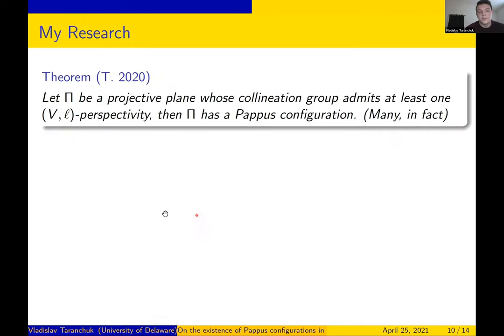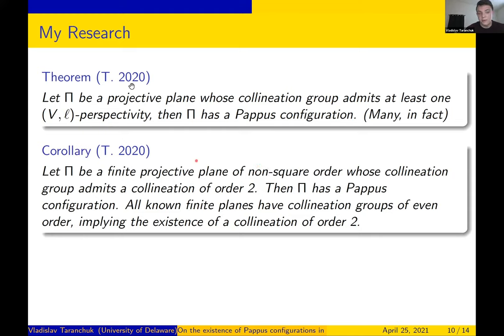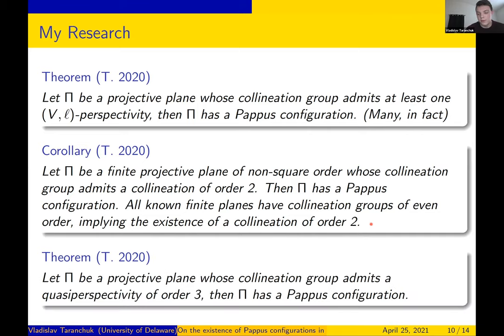So what results was I able to obtain? If my projective plane admits at least one VL perspectivity, then pi has a Pappus configuration as a corollary. If I have a finite projective plane of non-square order, then actually every collineation turns into a VL perspectivity, ensuring an order two collineation would actually imply the existence of Pappus configurations. In fact, all known planes of non-square order have even order collineation groups implying the existence of some order two collineation. There's a lot of work being done trying to classify the different automorphisms of the different possible planes.